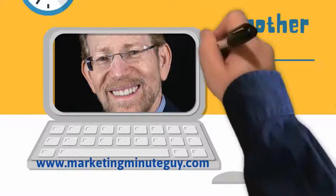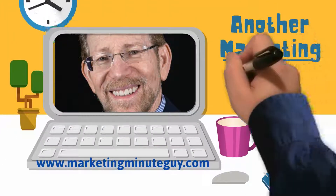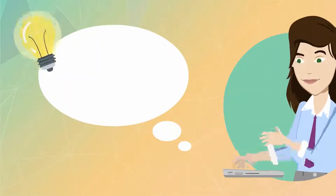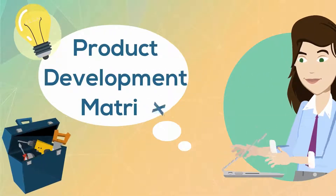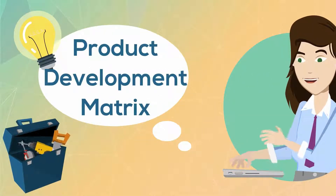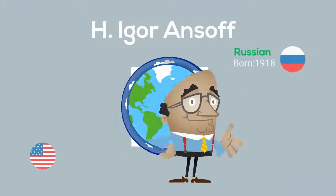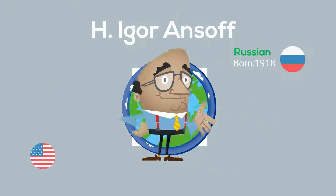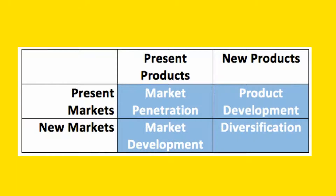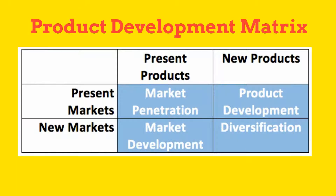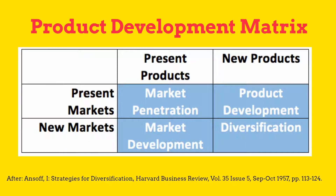Professor Ira here again, the Marketing Minute Guide, explaining the product development matrix, which is another great tool for marketers. Created by Russian-American management guru Igor Ansoff, each quadrant of the chart identifies a potential strategic approach for either new or existing products and markets.